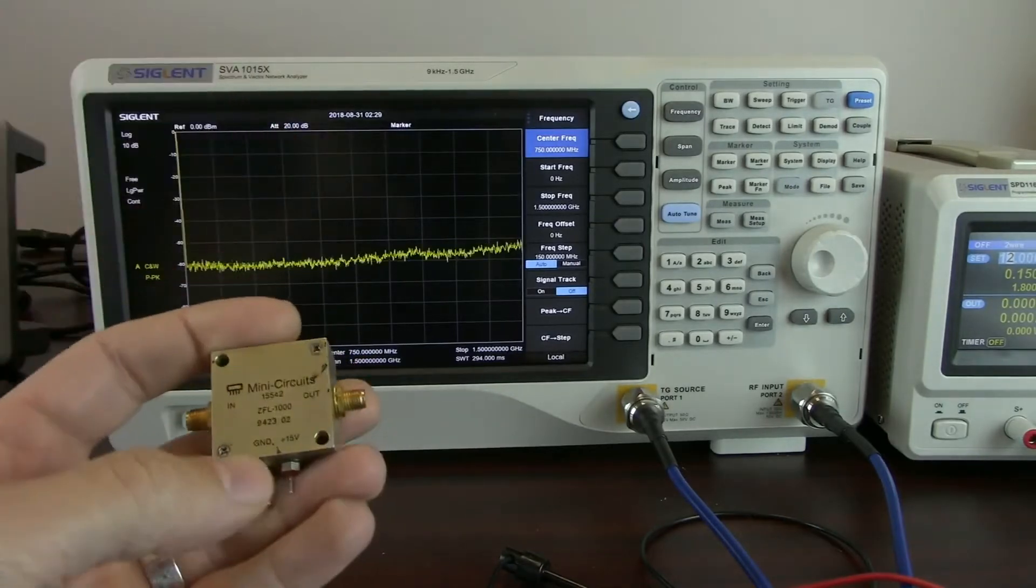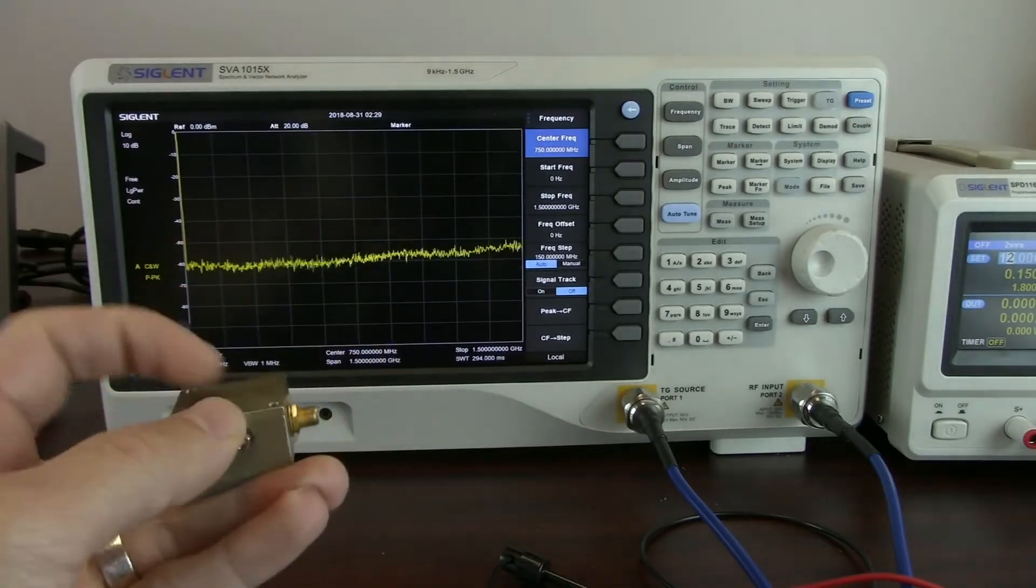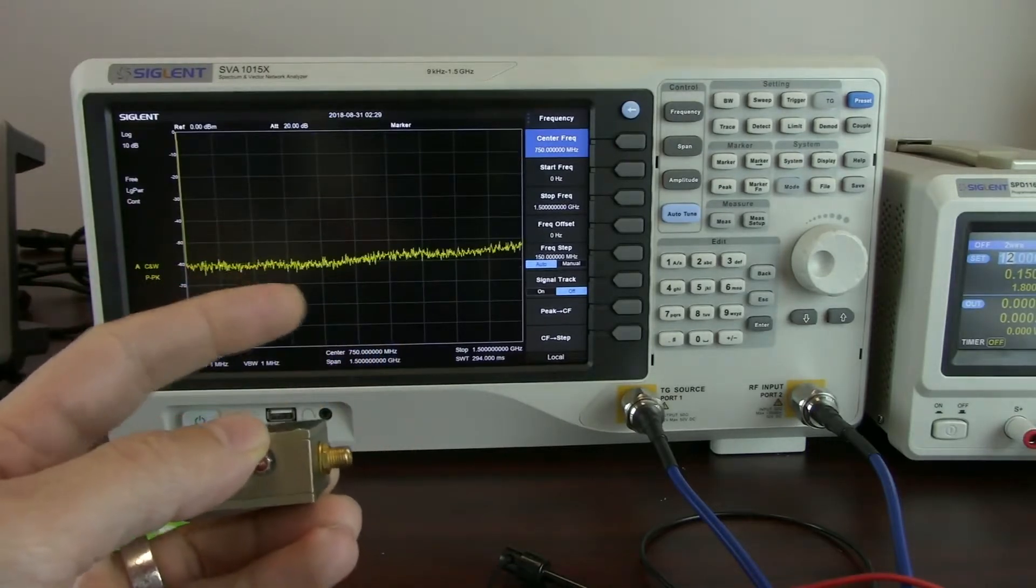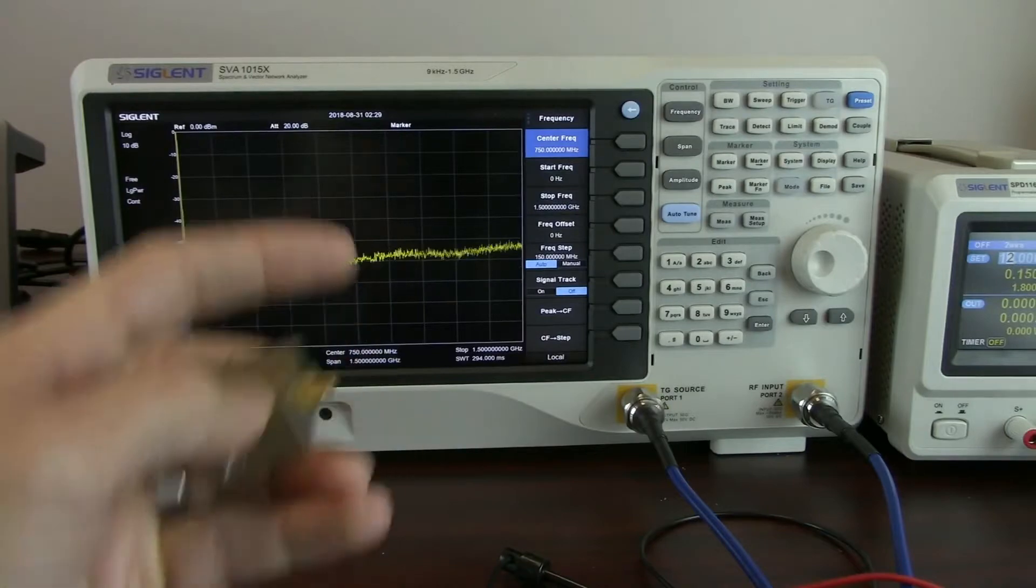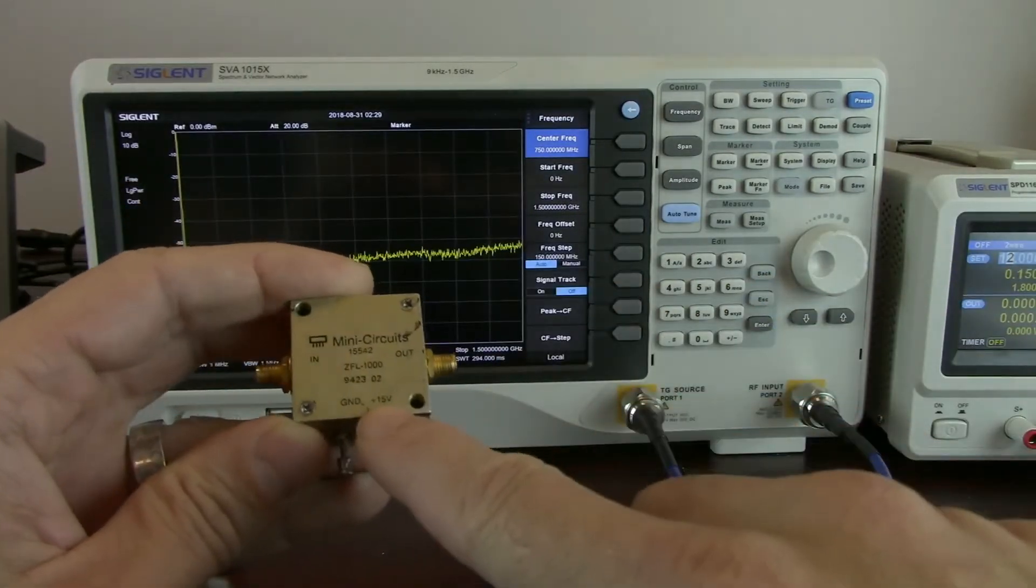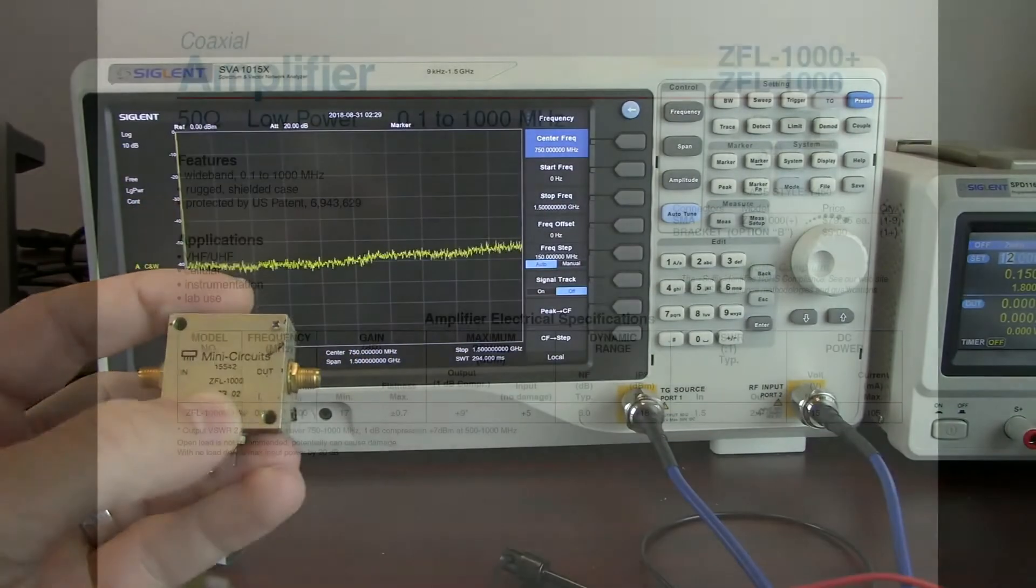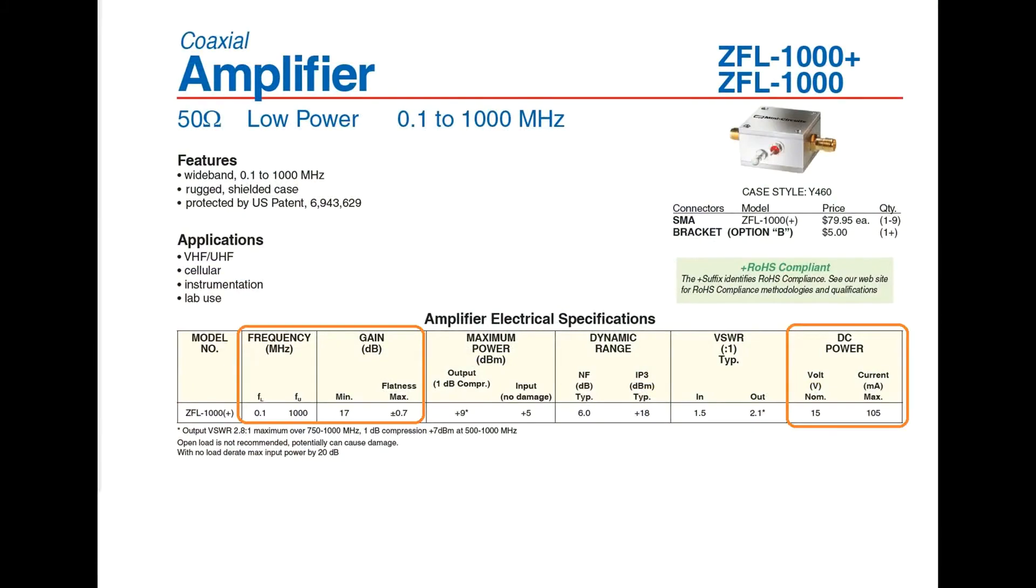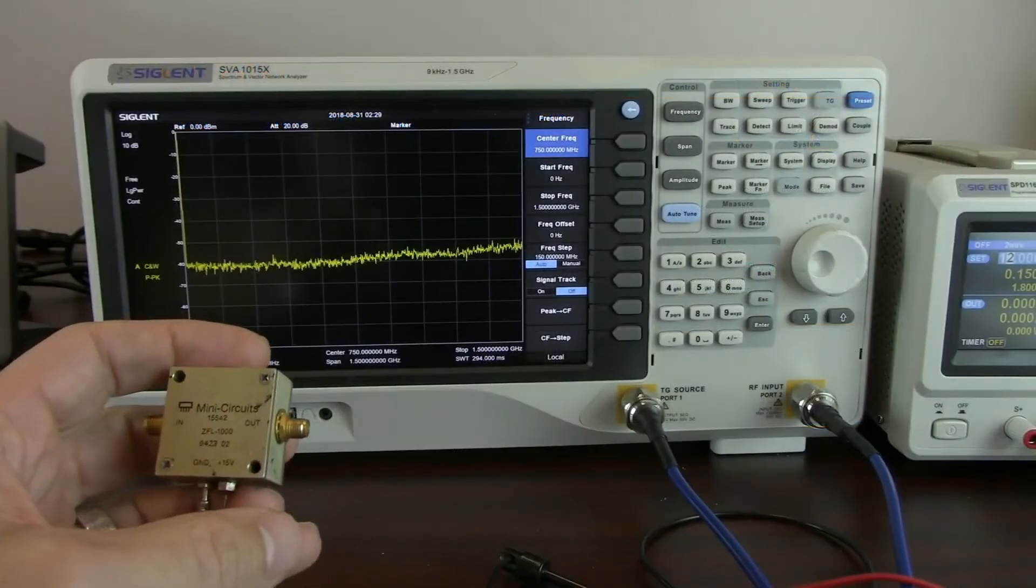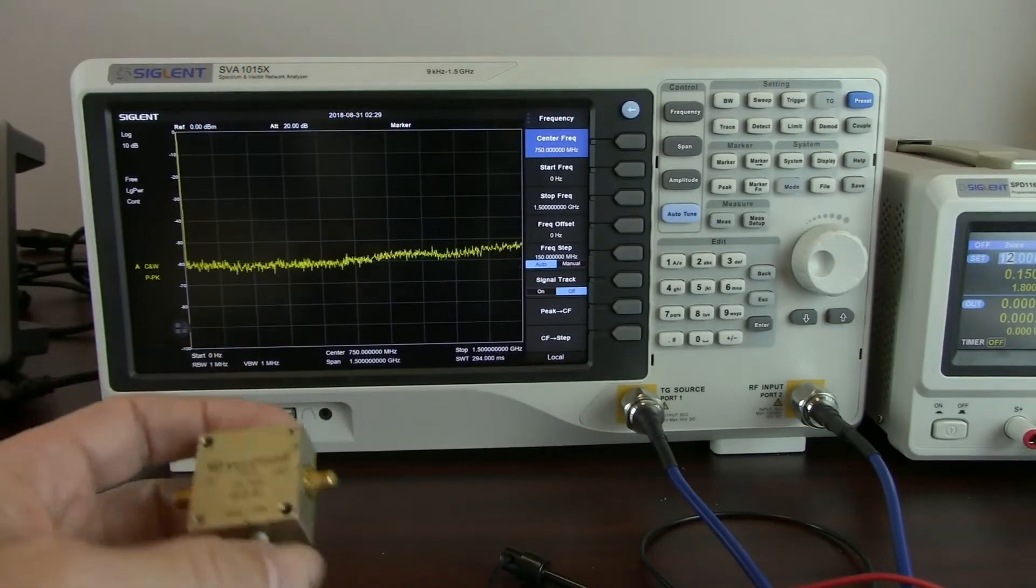For those of you that may be new to amplification or RF testing, an amplifier simply takes an input signal and increases the amplitude of that input signal and then sends it on its way. There's a supply voltage here of 15 volts on this particular mini circuits amplifier that's a ZFL-1000 and here is the subsequent datasheet. We've got the RF in and we've got the RF out and we're just going to give it an RF input and then measure the RF output.